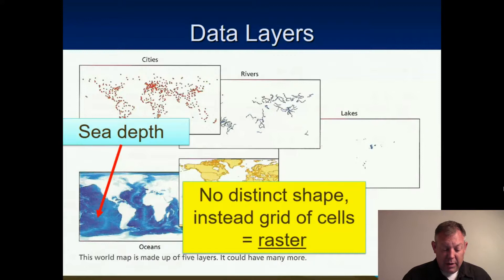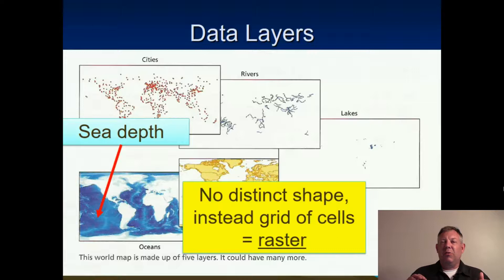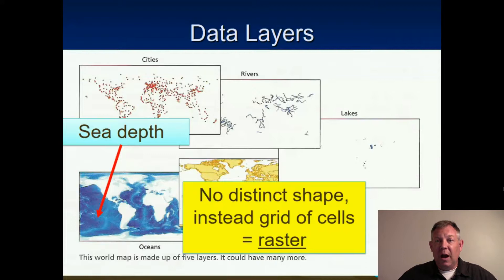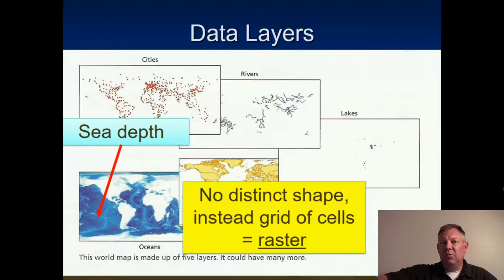Looking at this example in the slide, there's no distinct shape — this is a map of the depths of the ocean, and that doesn't really have a shape. Instead, what you do is break the ocean into a series of equal-sized grids, say a kilometer by kilometer, and then figure out the average depth of that grid and put that number in that grid. So you make a surface that smoothly changes from one value to another.